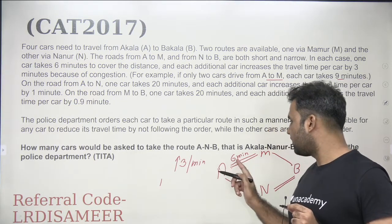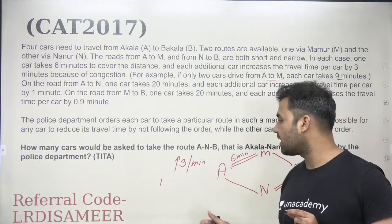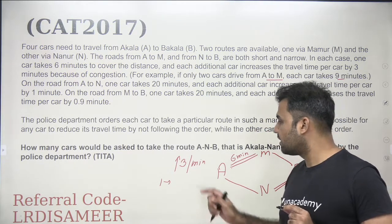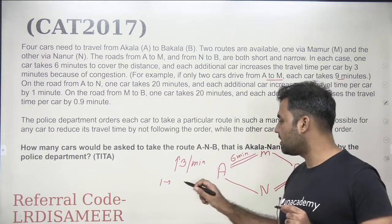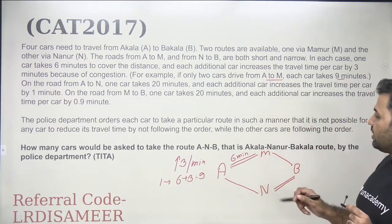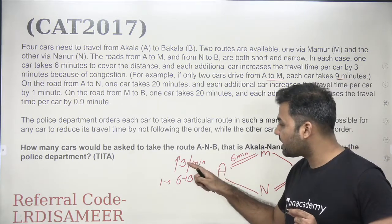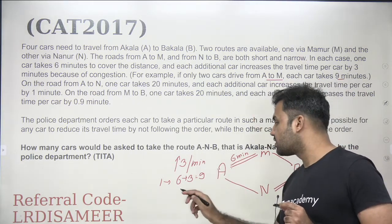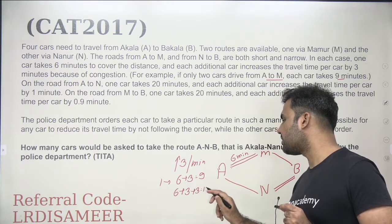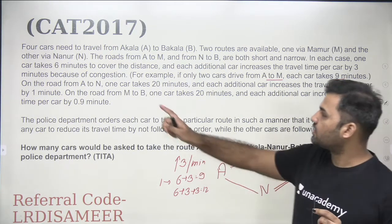For example, if two cars are going from A to M, that is one additional car, the time increases by three minutes per car — so the time would be six plus three, that is nine minutes. If three cars are traveling from A to M, the time increases by three minutes per car, so every car takes six plus six, that is twelve minutes.